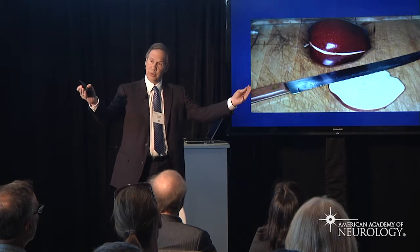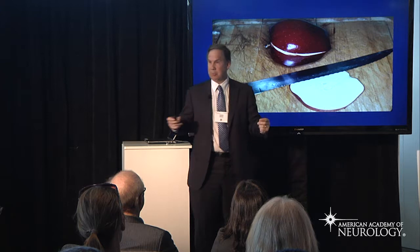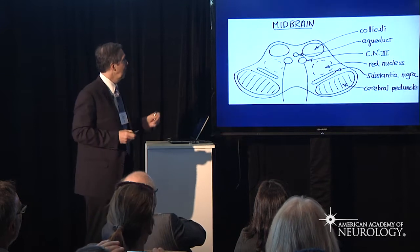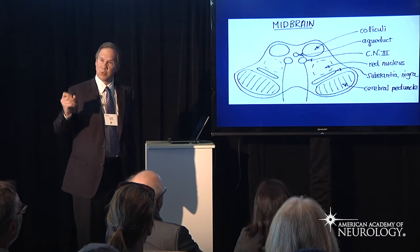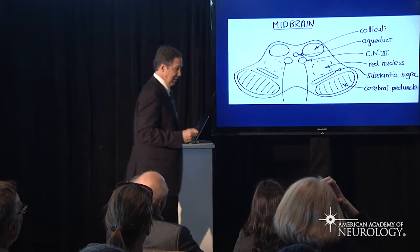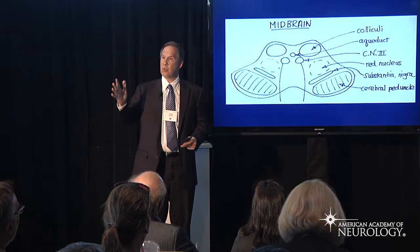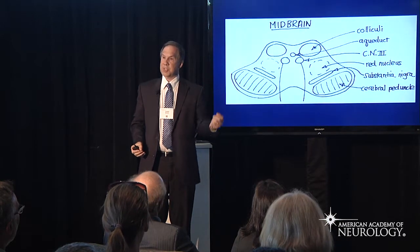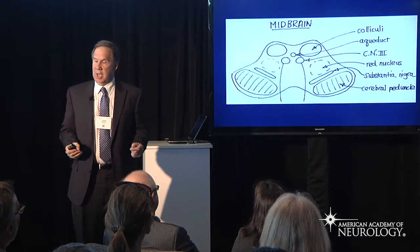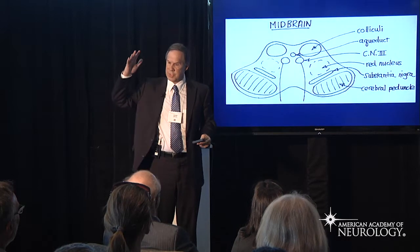Now we're going to cut through the midbrain. Notice when we cut the apple, we do in fact have red nuclei where the pits existed. Here's a homemade diagram of the midbrain, and here we introduce one of the fundamental rules regarding brainstem localization: a brainstem lesion is characterized by a cranial neuropathy on one side, and on the opposite side of the body there is weakness, sensory loss, or ataxia. Let's take a look at the 3rd nerve, the big mover and shaker of the eye — it moves the eye in, down, up, controls the lid, controls the pupil.